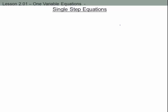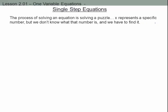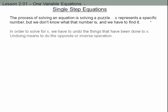We're going to look at one-variable equations, starting with single-step equations. The process of solving an equation is like solving a puzzle. X represents a specific number but we don't know what it is — it's like seeing someone from behind. In order to solve for x, we have to undo the things that have been done to x. Undoing means to do the opposite or inverse operation.